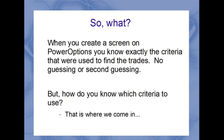When you create a screen on PowerOptions, unlike other services that might offer a stock list without explaining why they consider it bullish or bearish, you know exactly what criteria are being used to find trades for both the stock and the option. Some services provide trade picks without a full track record — you don't know if rolled positions were counted as losses or gains. On PowerOptions tools, there's no guessing. But how do you know which criteria to use?